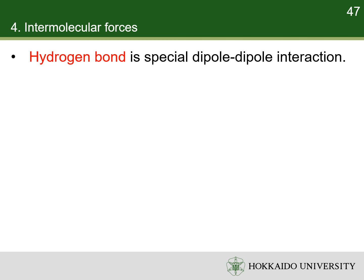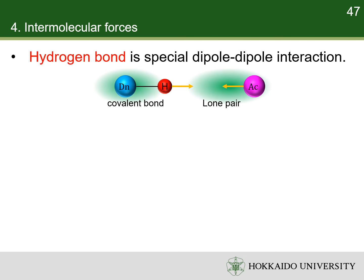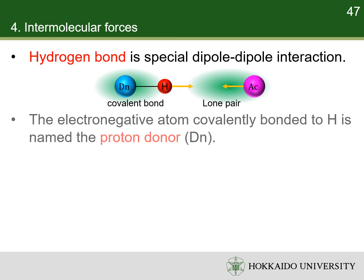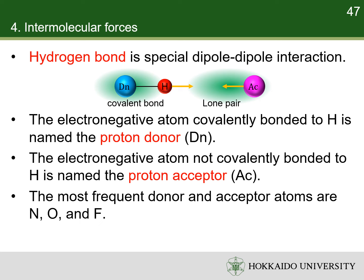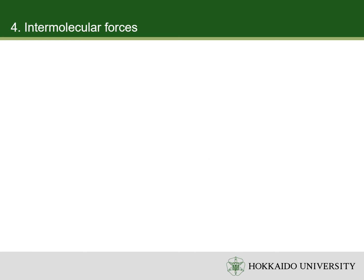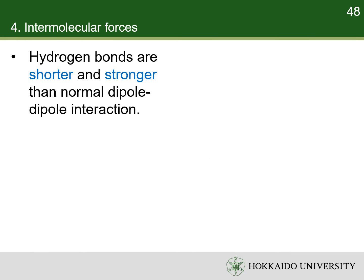A hydrogen bond is a special type of dipole-dipole interaction. It is primarily an electrostatic attraction between a hydrogen atom which is covalently bonded to a more electronegative atom and another electronegative atom bearing a lone pair. In a hydrogen bond, the electronegative atom covalently bound to the hydrogen is named the proton donor, whereas the one not covalently attached to the hydrogen is named the proton acceptor. The most frequent donor and acceptor atoms are the period two elements nitrogen, oxygen, and fluorine. A hydrogen bonding system is generally denoted D–H···A or X–H···Y. The hydrogen-acceptor distance is somewhat shorter than other van der Waals interactions and longer than covalent or ionic bonds. Hydrogen bonding is somewhat stronger than other van der Waals interactions and weaker than covalent or ionic bonds.